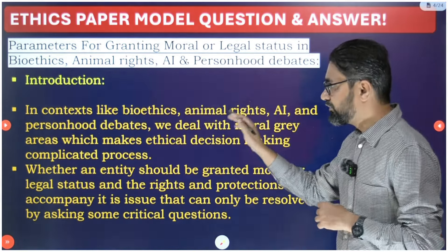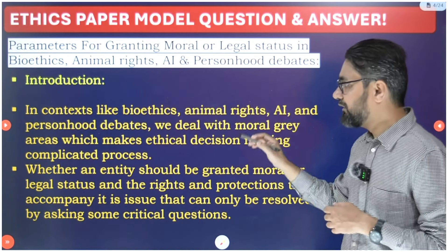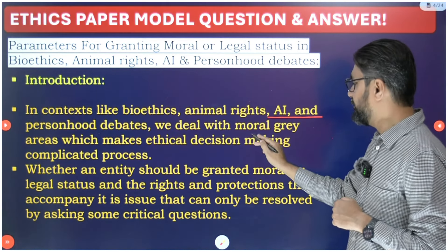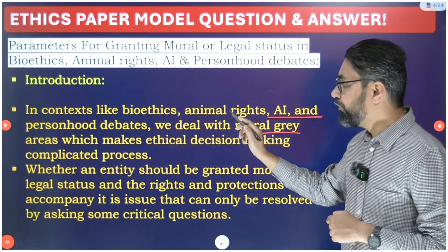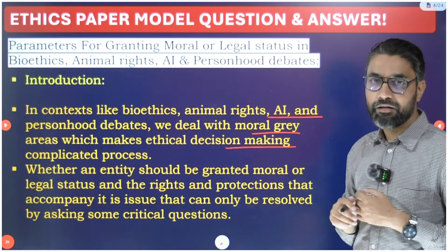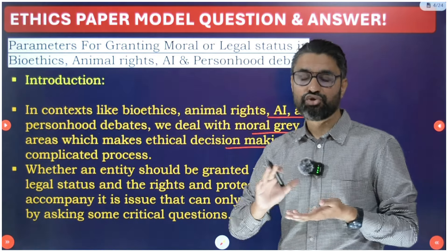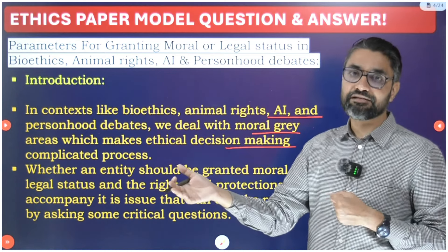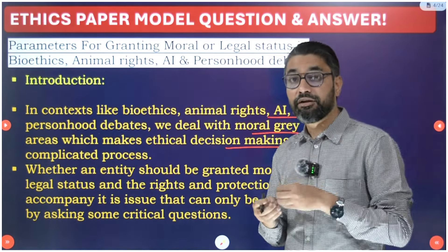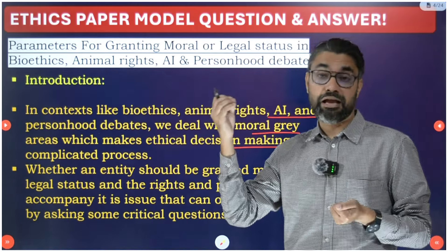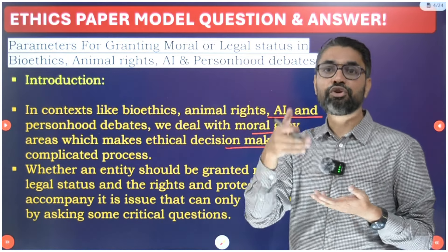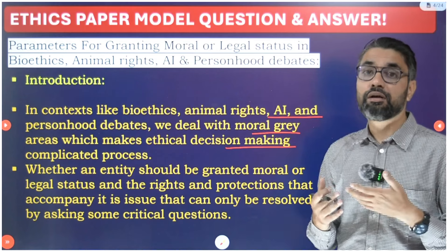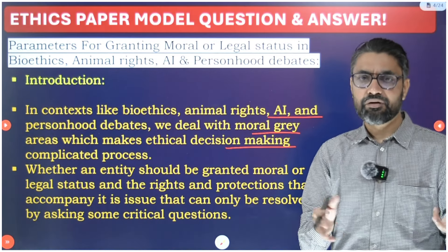In contexts like bioethics, animal rights, AI, and personhood debates, we deal with moral gray areas which make ethical decision-making a complicated process. Should we do it or not? Either way there is a cost. For example, if you don't do research on animals, human life won't improve and we won't get rid of diseases. But when we do use animals in research, that also raises moral concerns.